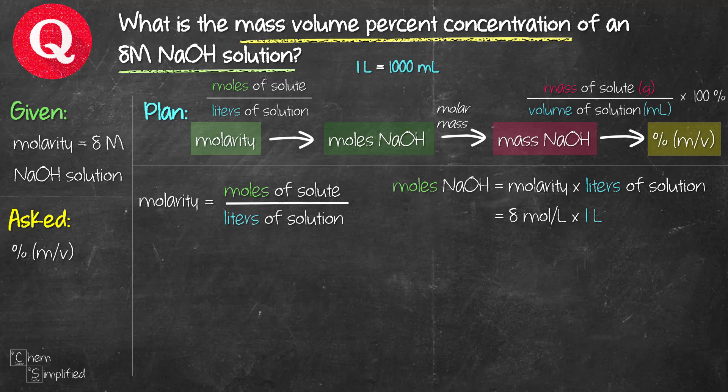If we didn't make an assumption for the volume of the solution, we wouldn't be able to solve it. So now that we've done this, we choose 1 liter for ease of calculation. So now that is going to give us 8 moles for the moles of NaOH. That's our first step.